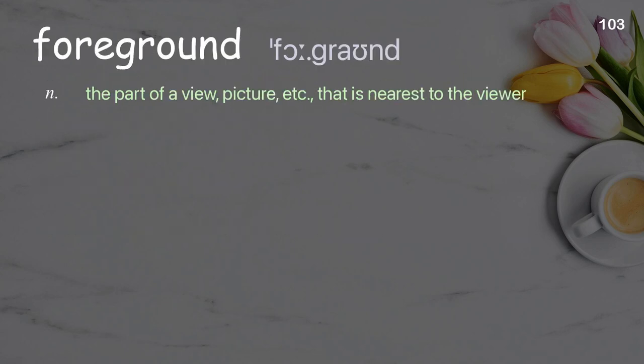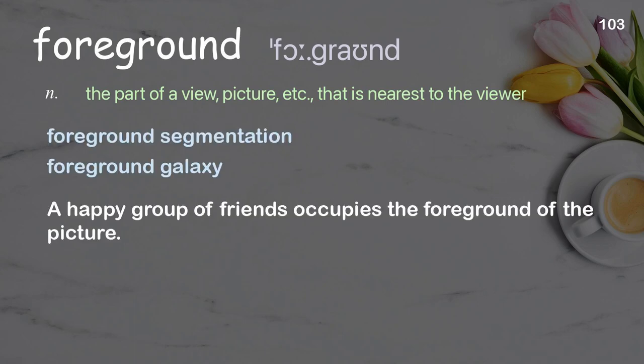Foreground: The part of a view, picture, etc., that is nearest to the viewer. Examples: Foreground segmentation. Foreground galaxy. A happy group of friends occupies the foreground of the picture.